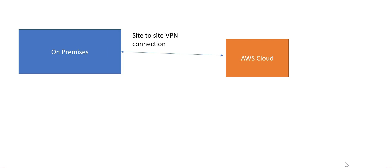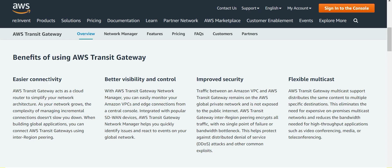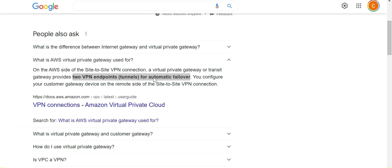The second option says to use Transit Gateway along with additional VPN tunnels. This is good because Transit Gateway provides easier connectivity, better control, improved security, and flexible multicast support. It is primarily used for high-throughput applications such as video conferencing. This is exactly our need — we need to increase throughput. So option B is correct.